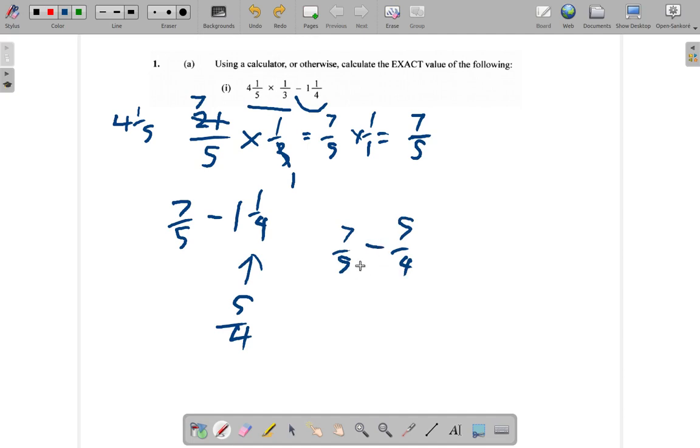So, you have 7 fifth minus 5 quarters. And then, since you have 7 fifth minus 5 quarters here, you can find the LCM of 5 and 4. Which is 20. 5 into 20 goes 4 times. 4 by 7ths. 28 minus 4 into 25.